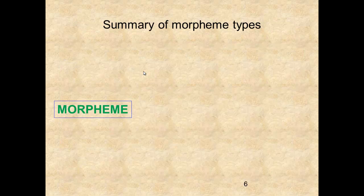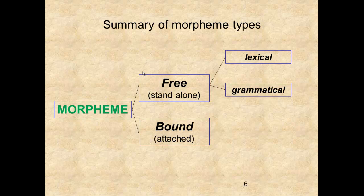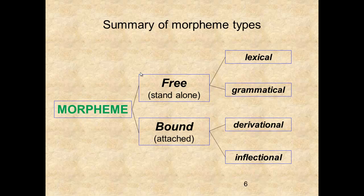This diagram summarizes our categorization of morphemes. They are either free or bound. Free morphemes are either lexical or grammatical. Bound morphemes are either derivational or inflectional. By memorizing this diagram, you will be able to easily analyze and discuss morpheme types. I recommend that you commit this diagram to memory to simplify your understanding of the topic.